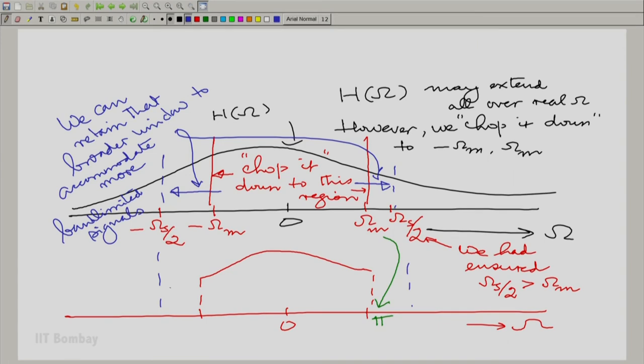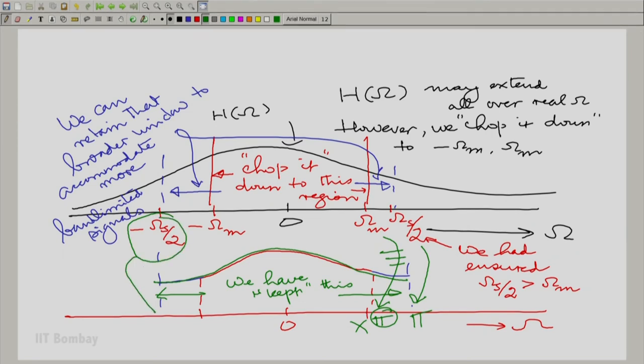We keep up to there. And now all this which I am marking in green is what we have kept. And therefore now it is not omega m which maps to pi, but omega s by 2 which maps to pi, a slight change. And therefore minus omega s by 2 maps to minus pi here.